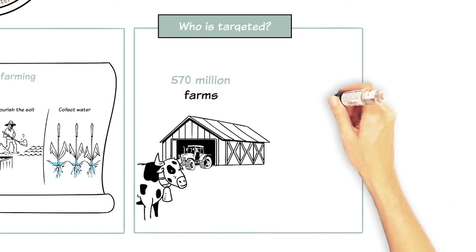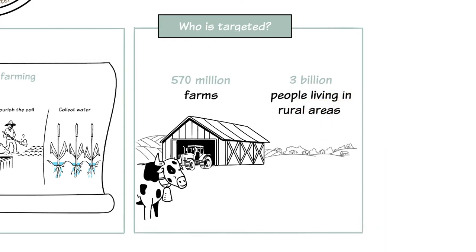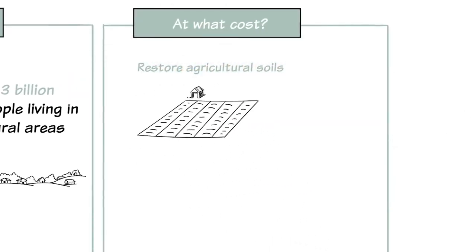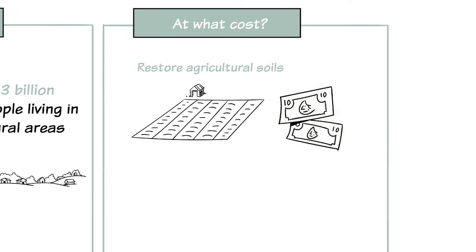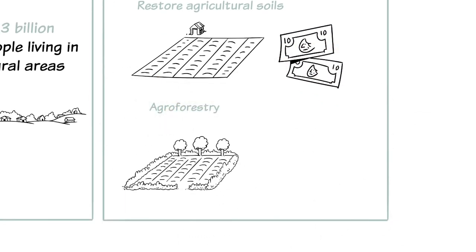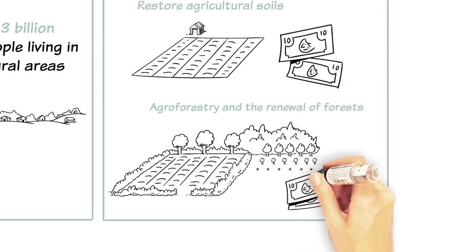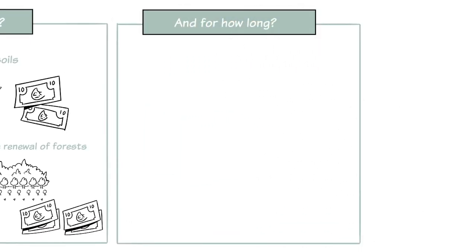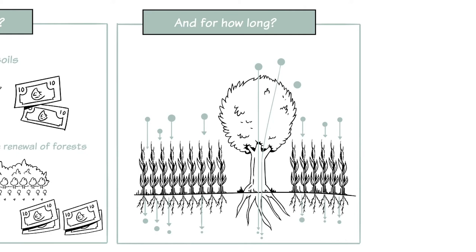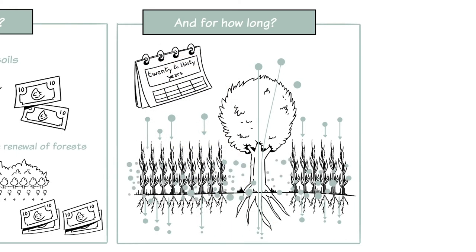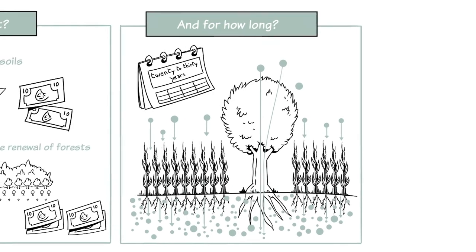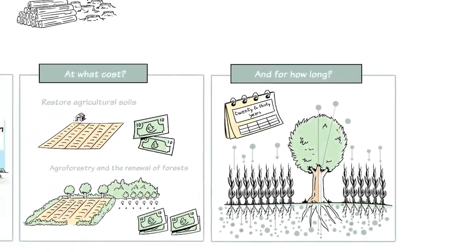There are 570 million farms in the world and more than three billion people living in rural areas who could implement these practices. To restore agricultural soils would cost a few dozen dollars per hectare, though agroforestry and forest renewal would require more investment. The sequestration of carbon in soil would continue for 20 to 30 years after the good farming practices are put in place, provided these practices are maintained.